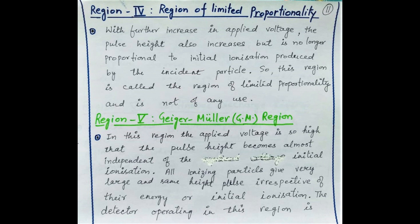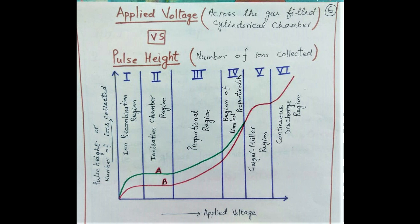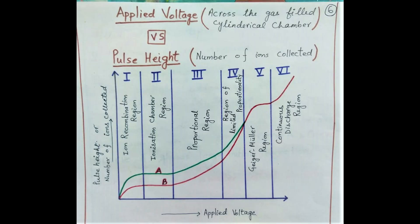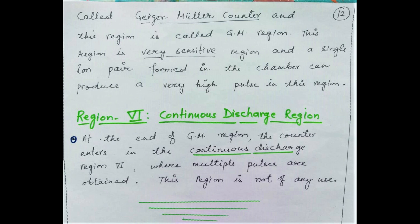Region 5 is also called the Geiger-Muller region or GM region. In this region the applied voltage is very high and the pulse height also becomes very high as well as independent of the initial ionizing particle. All ionizing particles give very large and same-height pulses irrespective of their energies or initial ionization. The detector operating in this region is called the Geiger-Muller counter. This region is very sensitive and even a single ion pair produced in the chamber can produce a very high pulse.